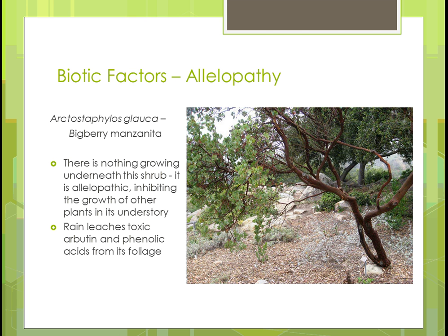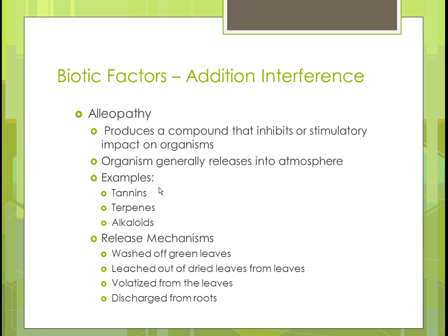It's going to keep growth of other things from occurring underneath it. Why does it want that? It wants all the nutrients it can get to itself. The rain leaches that substance from the foliage into the ground, and that's how it gets out there. Allelopathy produces a compound that inhibits or stimulates growth — it can be released into the atmosphere. Compounds like tannins, terpenes, and alkaloids are some examples. Release mechanisms include washing off leaves, leaching out of dried leaves onto soil, volatizing from leaves when wet from rainwater, or being discharged from the roots.